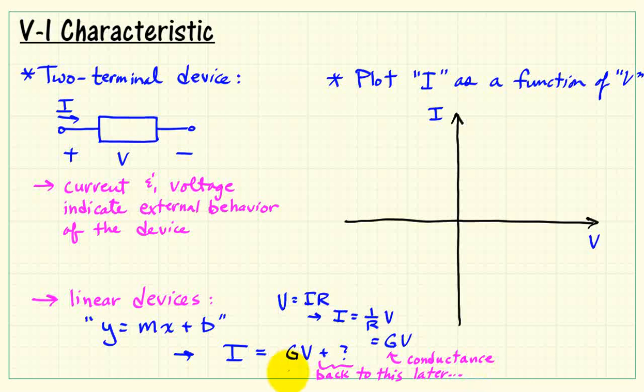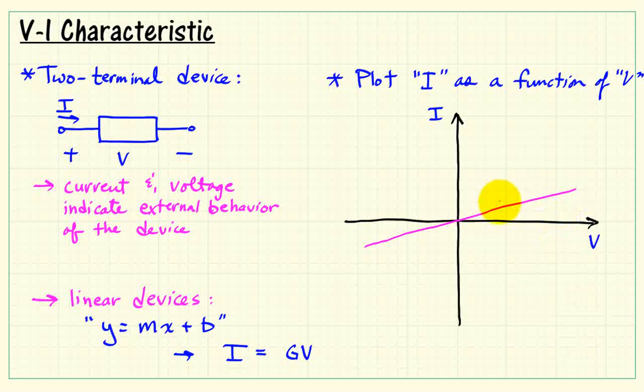Now, the idea of offset—let me come back to that in a little bit. So I'll take the offset off, and we will have I equals G times V. So here's one possibility for a particular slope of the line, and this would be the result for a resistor.